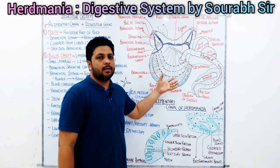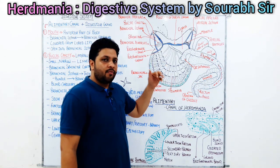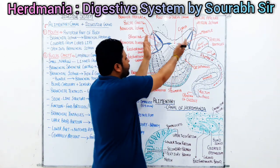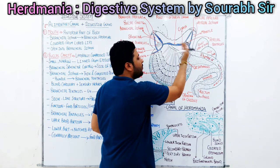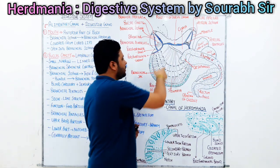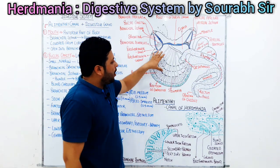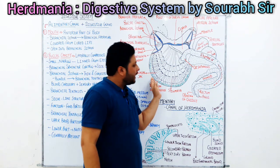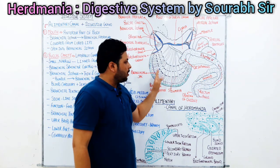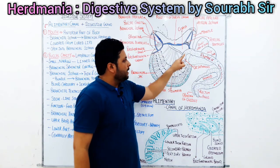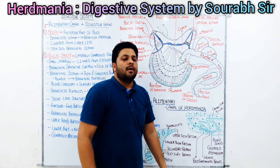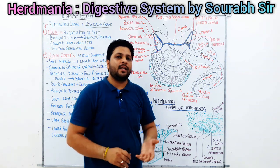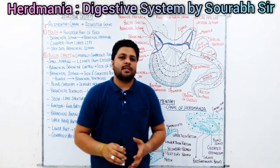Herdmania's body is divided into two major parts: the branchial region and the atrial region. The complete body has two major siphons — the branchial siphon and the atrial siphon — and in between, all the visceral organs are present. In the longitudinal section of Herdmania, we can see the ovary on one side and the testes, gonoducts, and rectum on another side. The complete cavity is developed from the coelom.